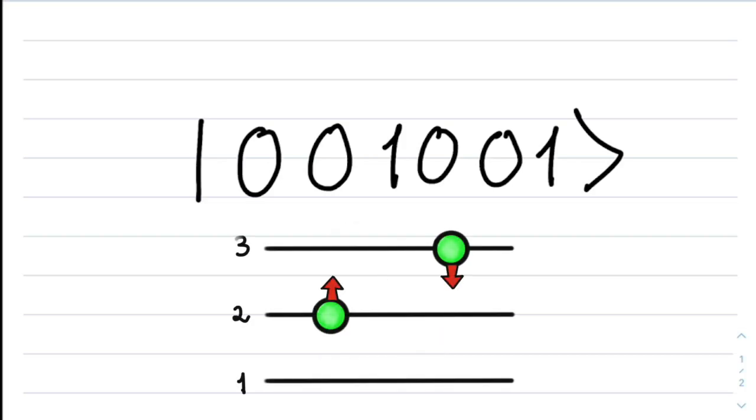If your answer is that it's one electron in the second energy level with spin up, and one electron in the third energy level with spin down, that is correct. You've learned how to represent electronic states using the Jordan-Wigner representation.